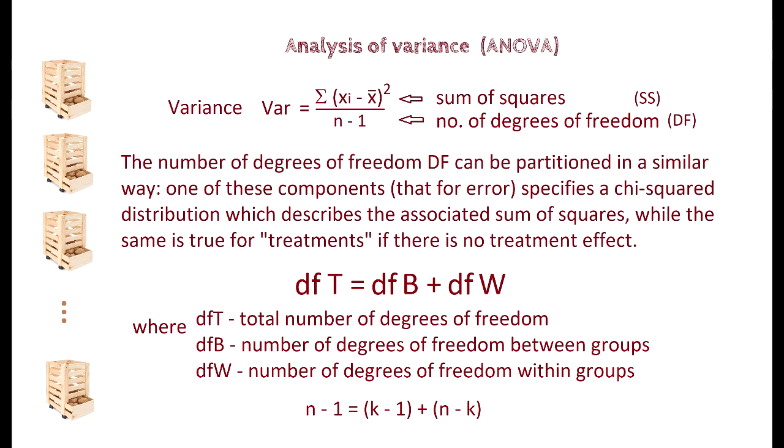We have the formula DFT equals DFB plus DFW, where DFT is total number of degrees of freedom, DFB is number of degrees of freedom between groups, and DFW is number of degrees of freedom within groups. So we have N minus 1, this is for total, equals K minus 1, between groups, and N minus K is within groups.